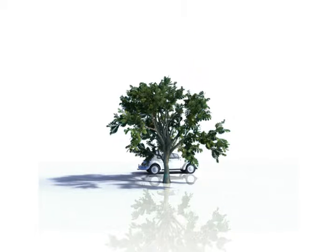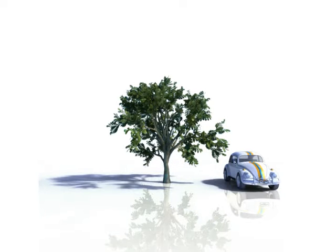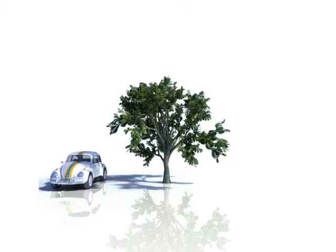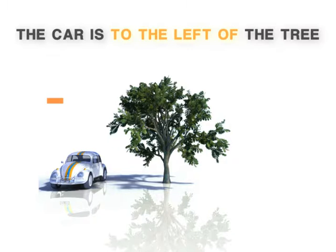Let's move the car to the right of the tree. Again, the tree is our reference point and the new reference direction is 'to the right of.' We use a plus sign to indicate that the car is to the right of the tree. Now we'll move the car to the left. We use a negative sign to express that the car is on the left side of the tree.